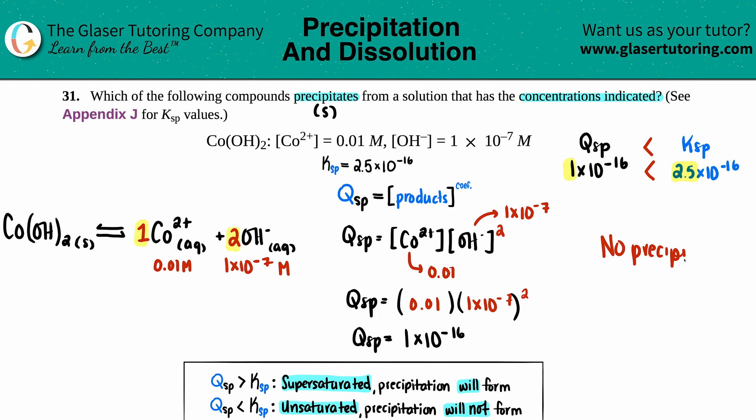In this case, no precipitate - no solid is going to be formed because we are still an unsaturated solution. You could add more, and at one point there will be a precipitate, but not here, not with these values.